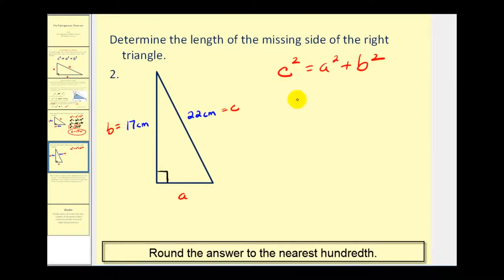So using our Pythagorean Theorem, we would have 22 squared must equal A squared, which we don't know, plus 17 squared.